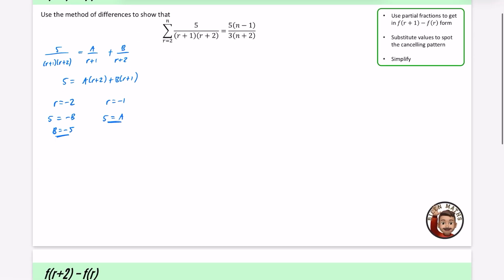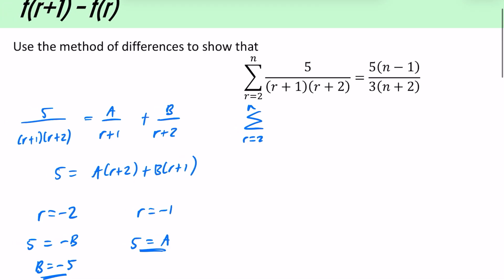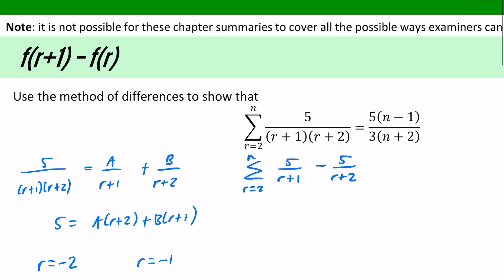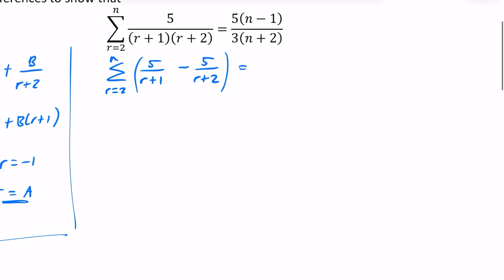Which now means that instead of writing that thing that we've got at the top, we can change it so that it is with our partial fractions version, so that it is going to be our 5 over r+1 minus 5 over r+2. It's not exactly in this kind of form we've got here. It's actually the other way round, but it's still going to give you that same cancelling pattern. The key difference is there's just a difference in one between these things, and it's called a method of differences, meaning that there is a difference, there is something that is being subtracted with them like this.